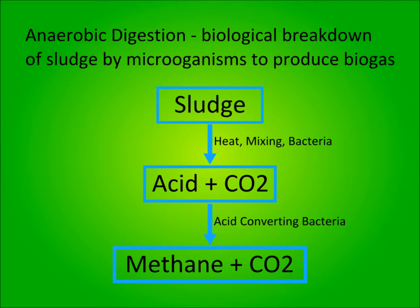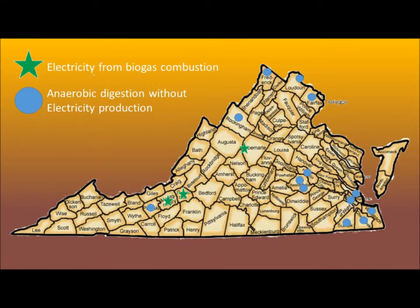That methane is a renewable biogas that burns cleaner than traditional fossil fuels. As shown in the diagram of Virginia treatment plants that utilize anaerobic digestion in their treatment process, it is fairly common. However, there is a disconnect between plants that utilize anaerobic digestion and ones that generate electricity from biogas combustion. Most plants simply flare it off as heat for the digester and HVAC units. Only three plants in Virginia generate electricity from biogas.